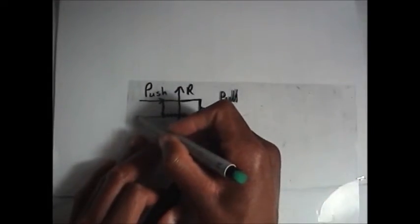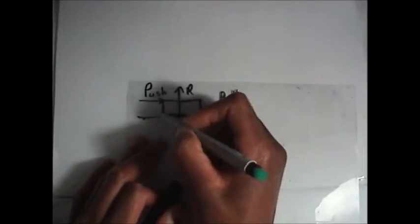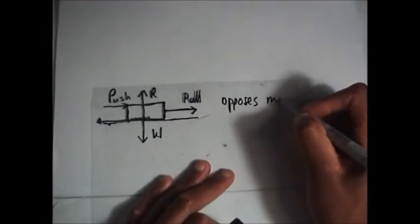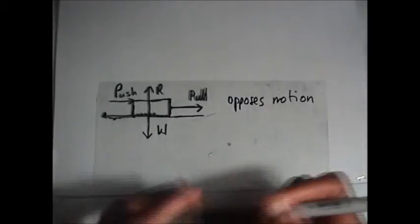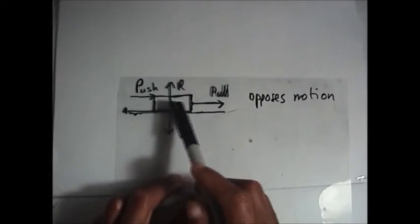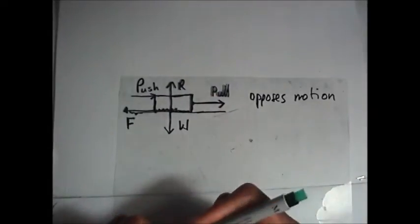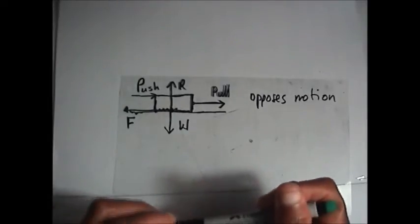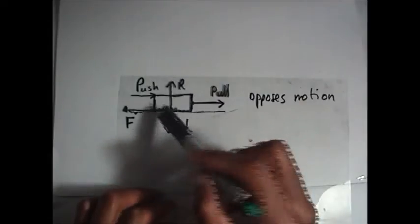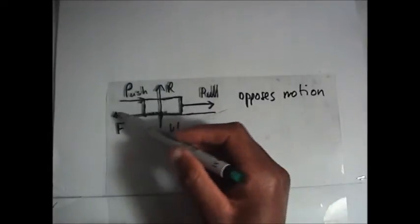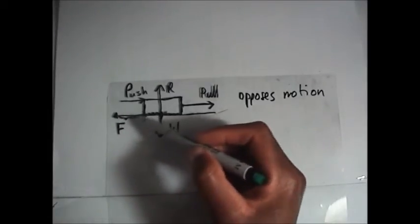When John is pulling, there is a contact force. As the block moves, if it's on a tarred road, there is also friction. Friction acts in the opposite direction of motion — if the block is moving to the right, friction faces left, because friction opposes motion. Friction is represented by the letter F.